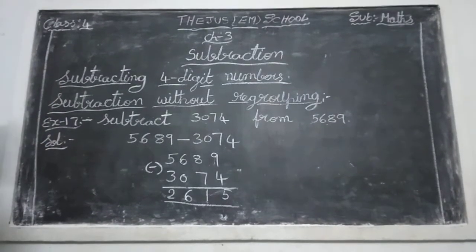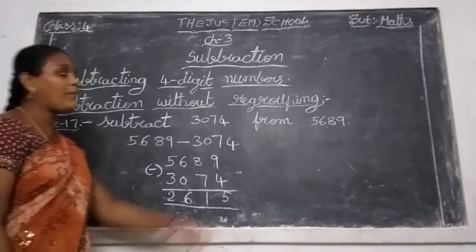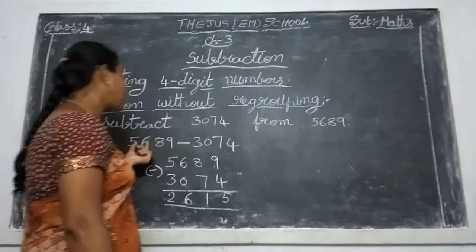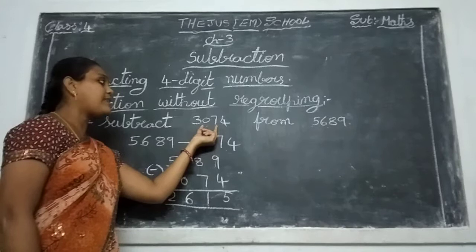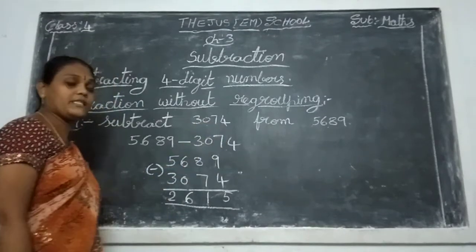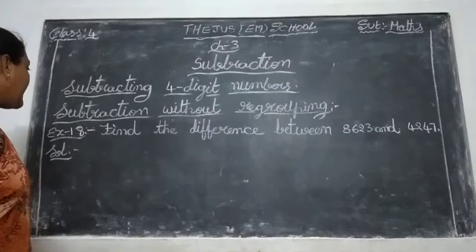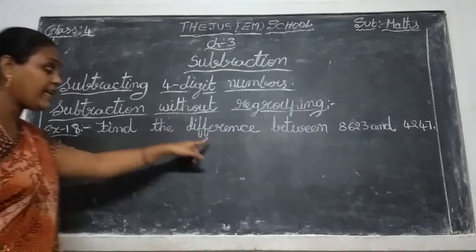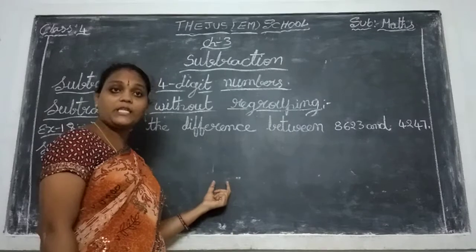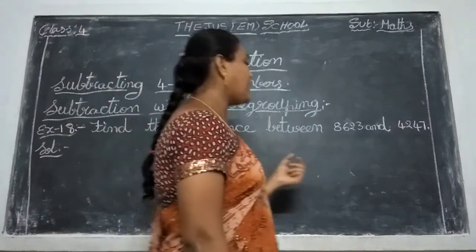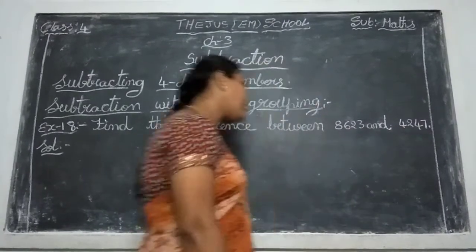Note in your notebooks, children, without mistakes. Observe that. Anytime you write the subtraction: from after the number, write the first. Next, write the minus symbol. And next, write the second number. Okay children, next is example 18: find the difference. Difference means the answer in subtraction is called the difference.